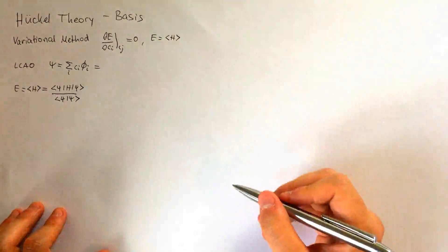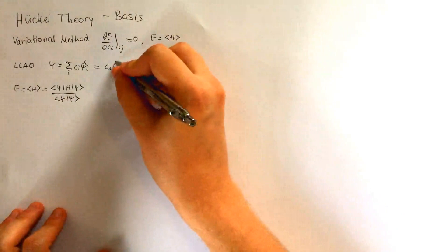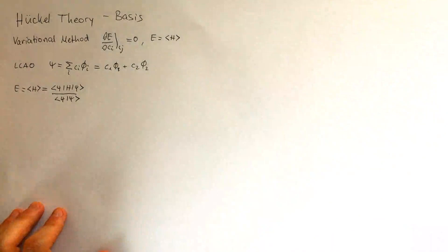If now we say that our total wave function just consists of two atomic orbitals for simplicity, we can write C1 phi 1 plus C2 phi 2, where C1 and C2 are the parameters which we'll use to minimize the energy.